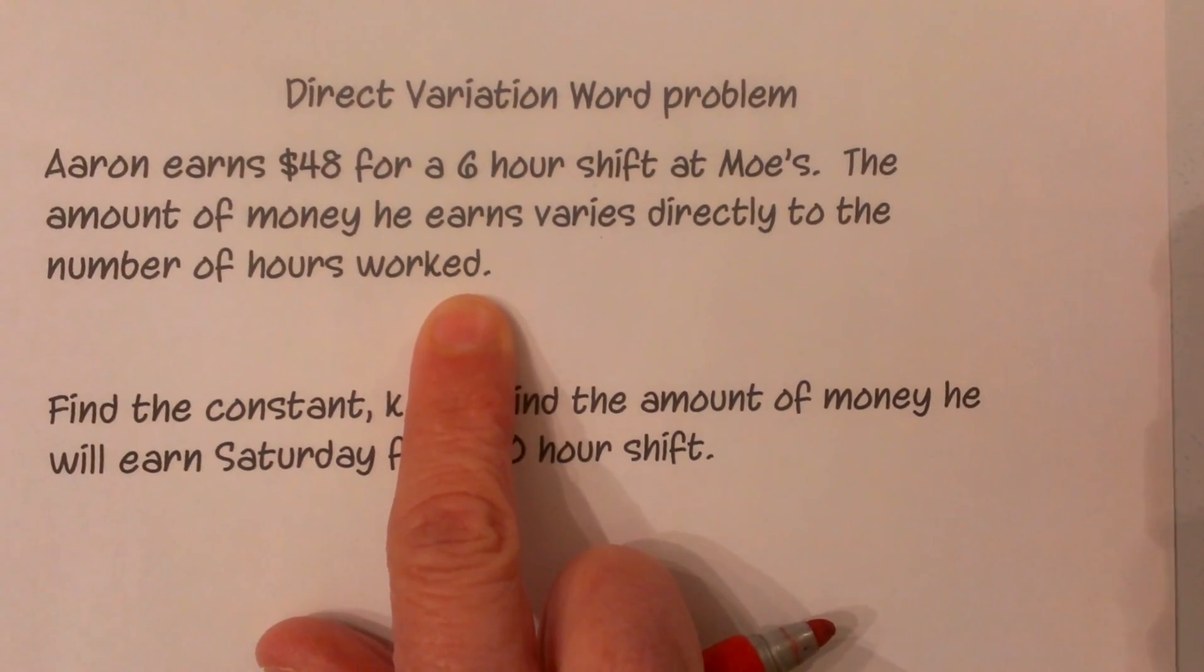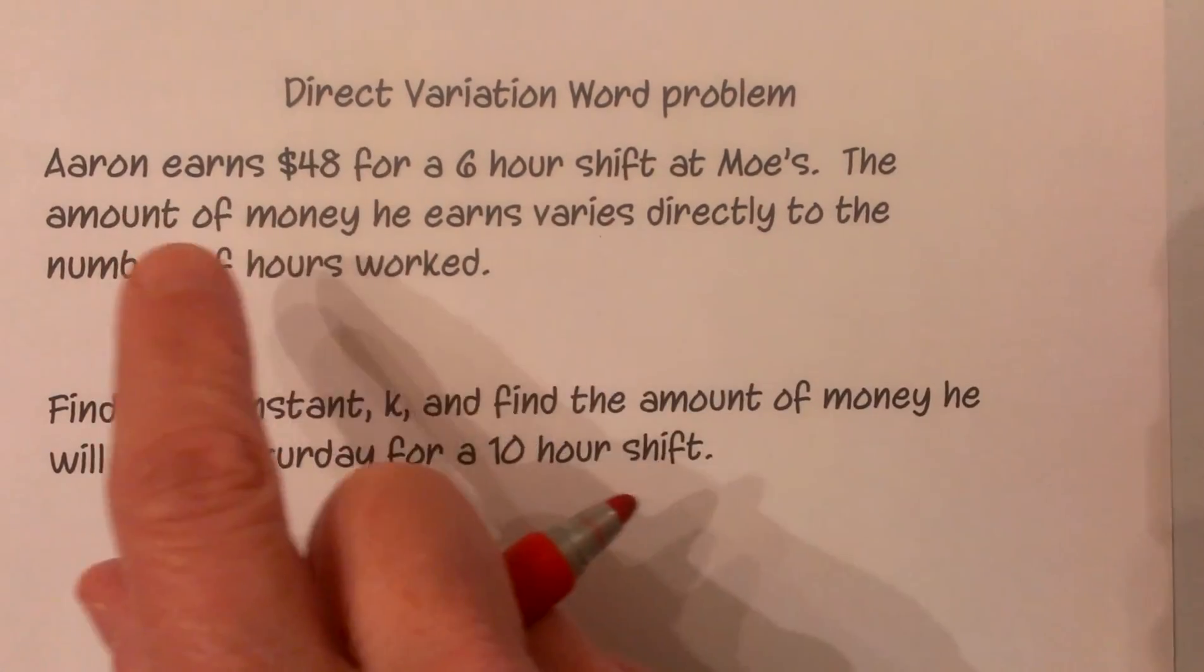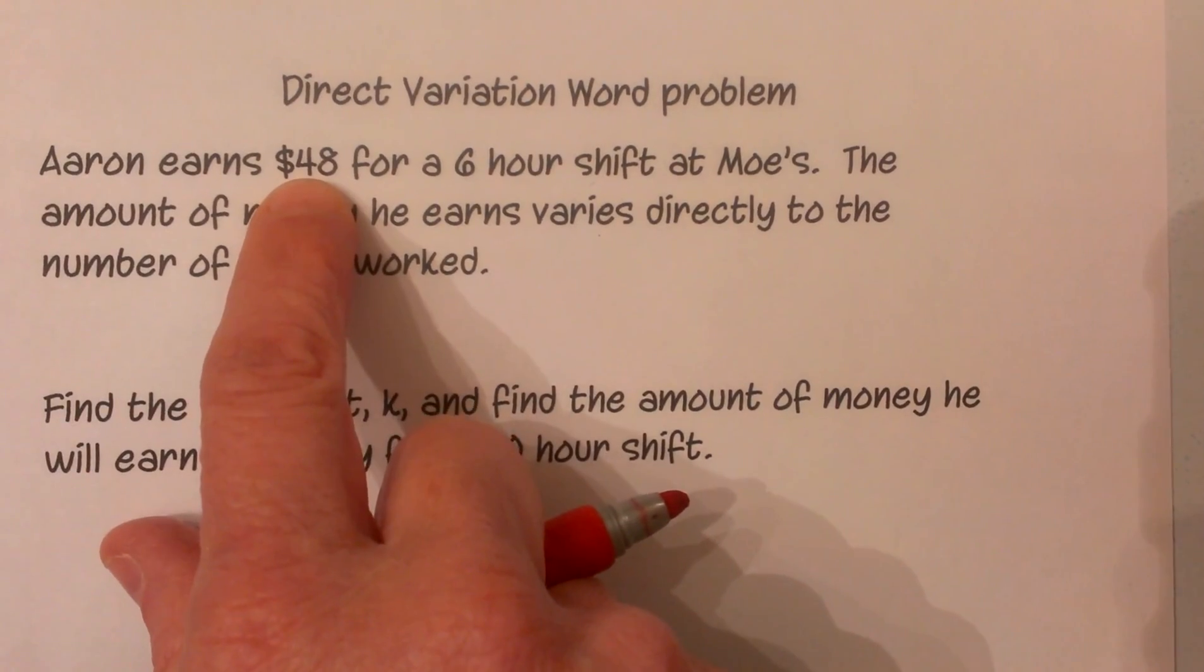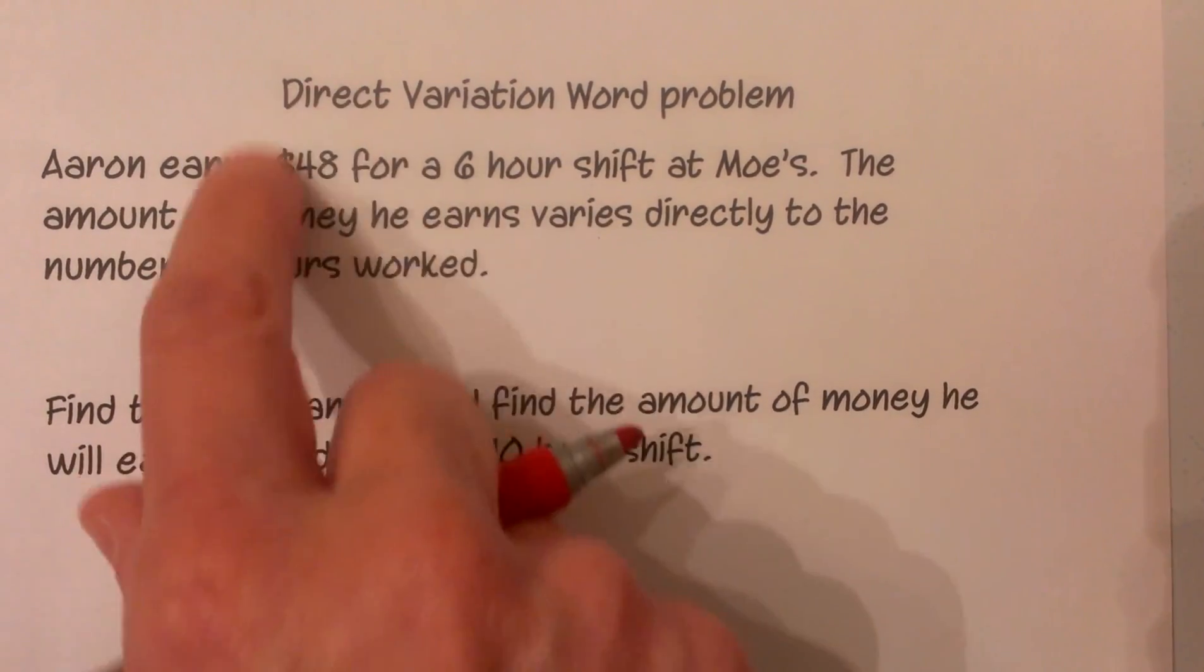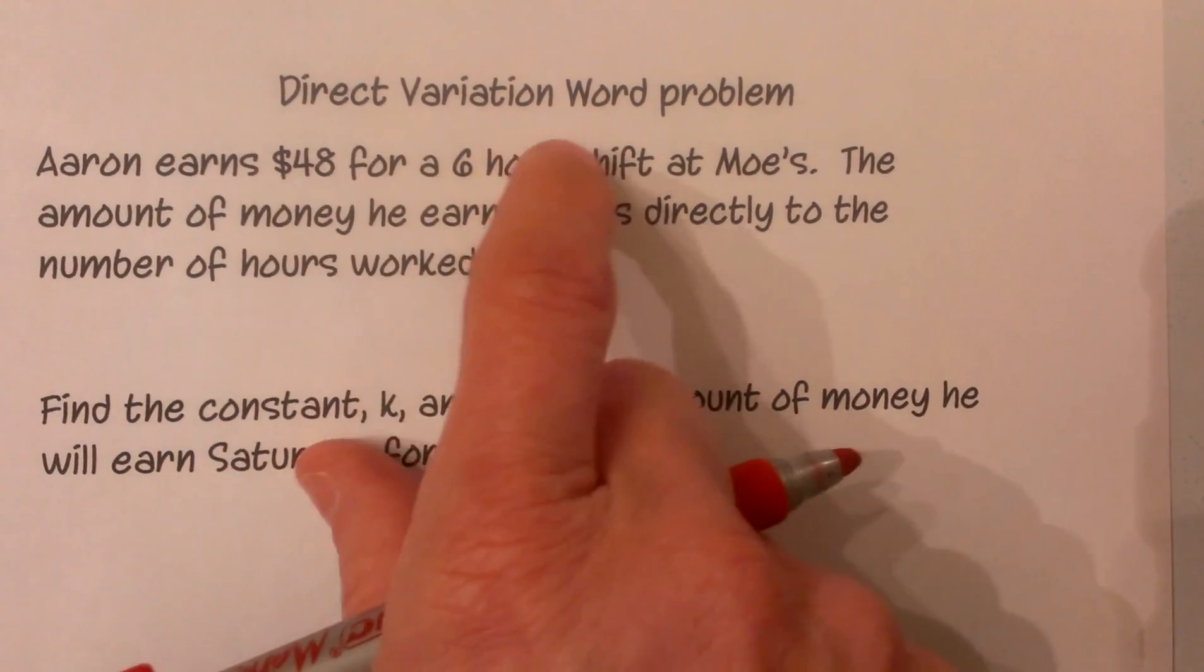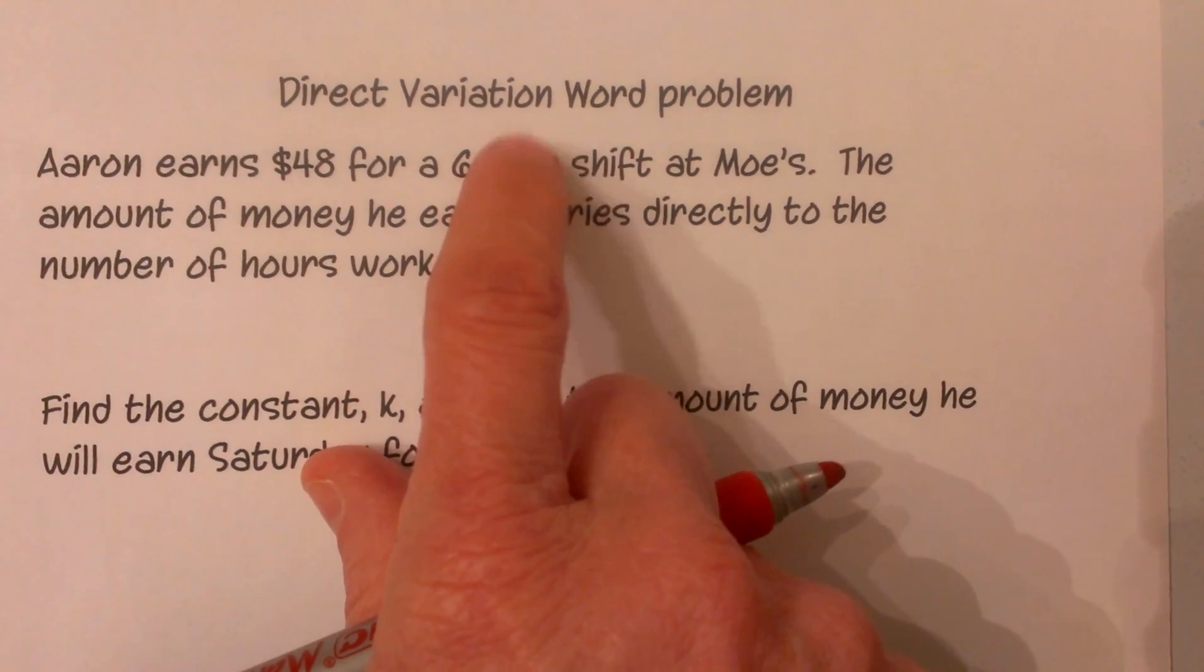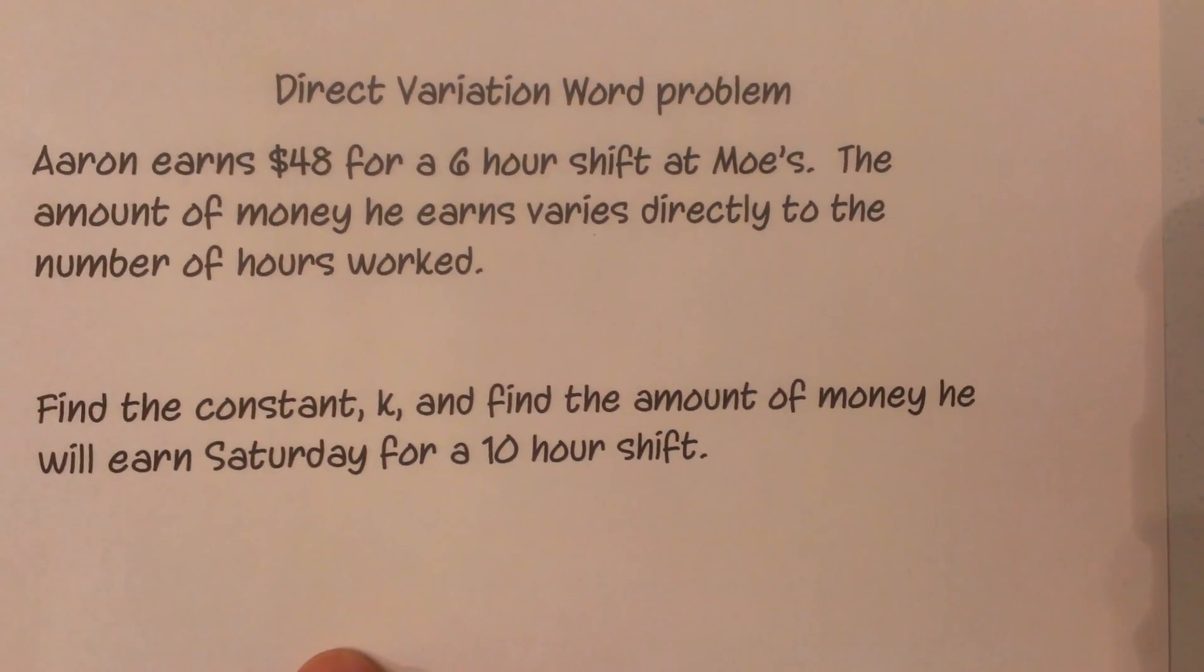So what is depending on the other? The money depends on how long you work. So the money, or your output, is your y, and your working hours is going to be the x or the input.